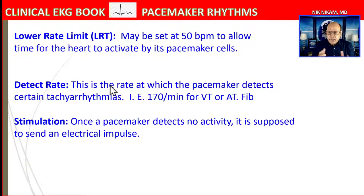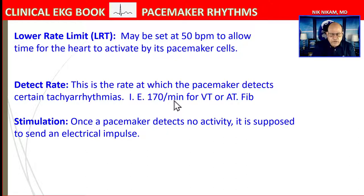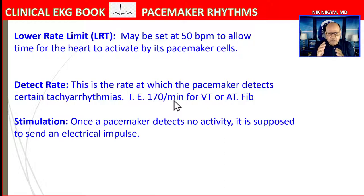The detect rate is used to identify arrhythmias like atrial fibrillation with rapid ventricular response or ventricular tachycardia. For example, if the detect rate is set at 170 BPM, the pacemaker computer analyzes whether this is a narrow QRS complex tachycardia or wide QRS tachycardia. It compares QRS morphology to baseline to differentiate supraventricular tachycardia with aberration versus ventricular tachycardia.